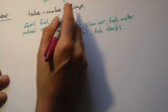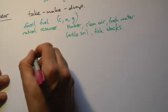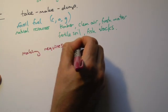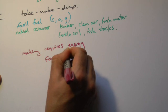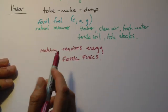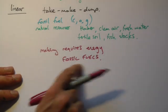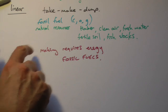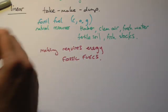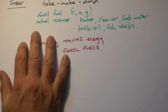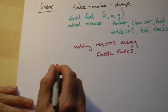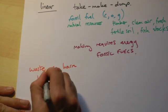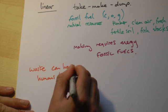In terms of this take-make-dump society, making things requires energy. A lot of that energy comes from fossil fuels — burning coal in power stations, burning gas. So not only are we taking fossil fuels out of the ground to make things, we're also burning fossil fuels for energy — it's a kind of feedback. And when we dump waste materials, depending on what it was, it can harm humans and other wildlife, plants, and animals.